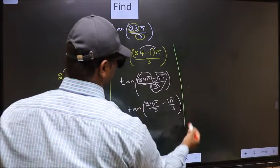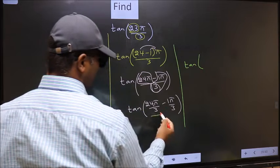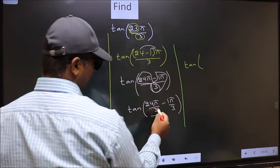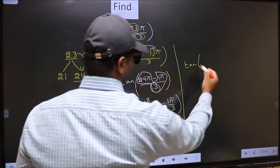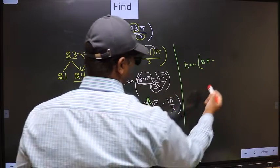Next, tan. Now we should cancel: 3 into 3 is 1, 3 into 24 is 8. So we get 8π minus π by 3.